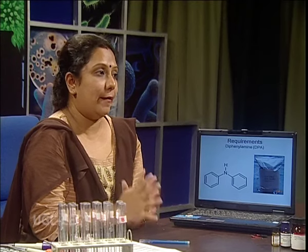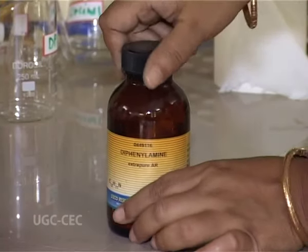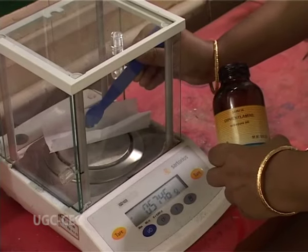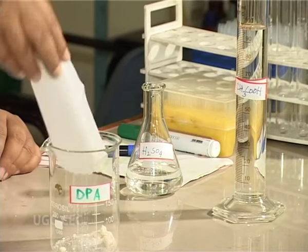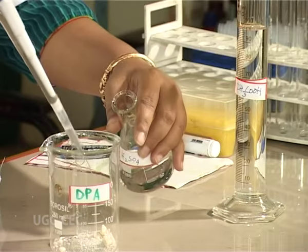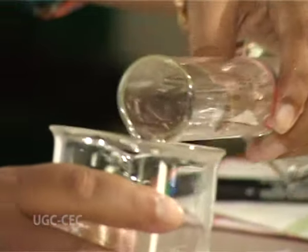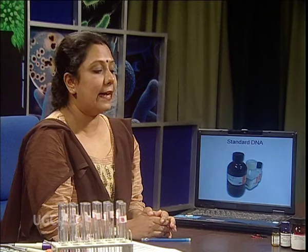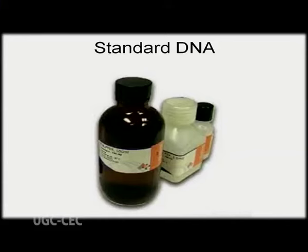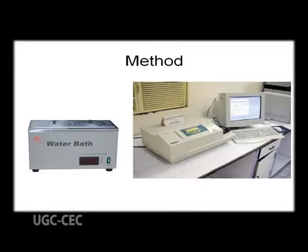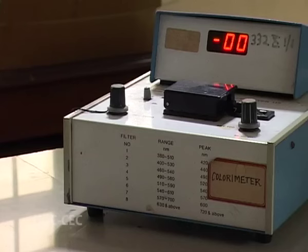For the reagents required: take 1.5 grams of diphenylamine, dissolve it in 1.5 ml of sulfuric acid — a very hazardous chemical — and make up the volume to 100 ml with glacial acetic acid. We need both sulfuric and acetic acid together. Standard DNA is also needed to compare with the unknown DNA. The method involves acid hydrolysis with heat, so a water bath is required. After color development with diphenylamine reagent, you need a colorimeter or spectrophotometer to measure the visible blue color at around 595 nm.